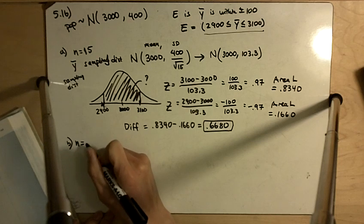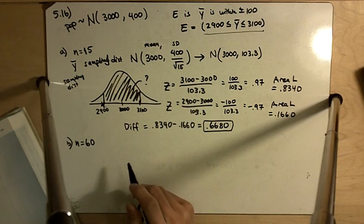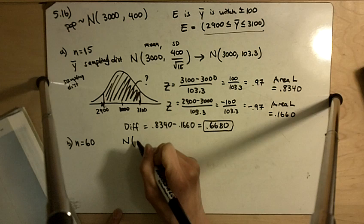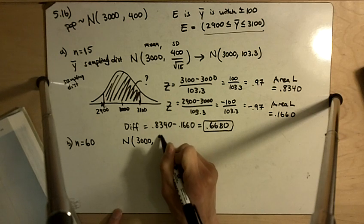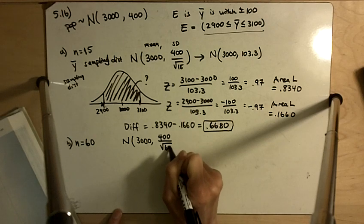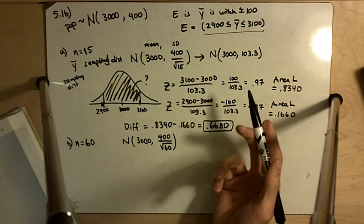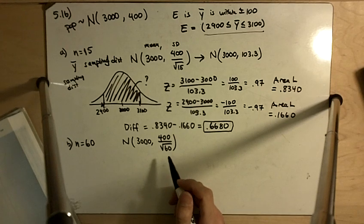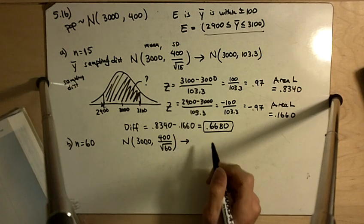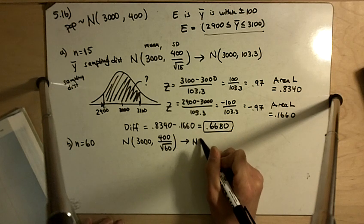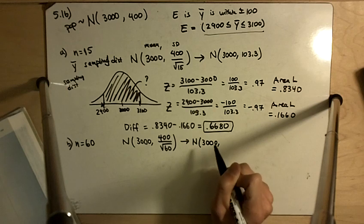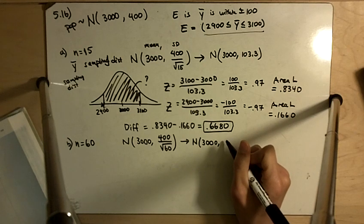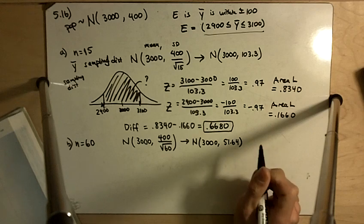Part B asks a very similar thing, except now we're increasing our sample size to 60, and so that means that we're going to have a normal distribution with mean 3000, and standard deviation is going to be 400 divided by the square root of 60. So when we increase the sample size, our standard deviation decreases. That's the standard deviation of the sampling distribution. The mean of our sampling distribution doesn't change, so it's going to create a more narrow distribution.